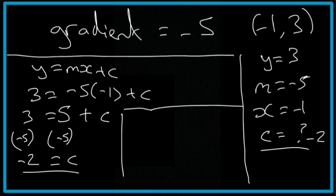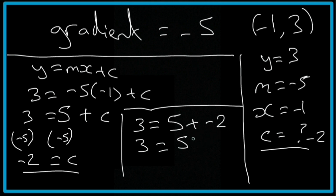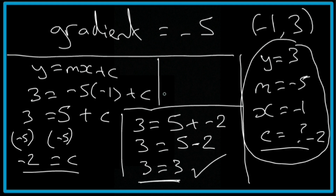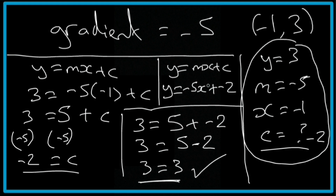We can double check this: 3 = 5 + (-2). A positive and negative sign next to each other becomes a negative, so that's 5 - 2 = 3. That balances, so it's correct. Now we can write the final equation in the form y = mx + c: m is -5 and c is -2. A positive and negative makes a negative, so the final answer is y = -5x - 2.